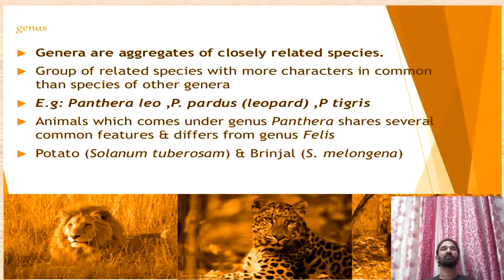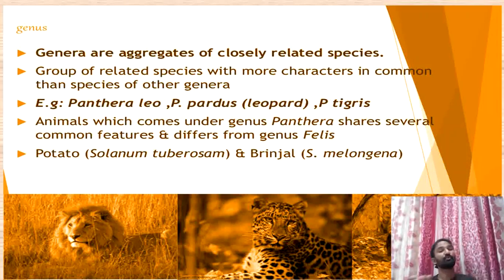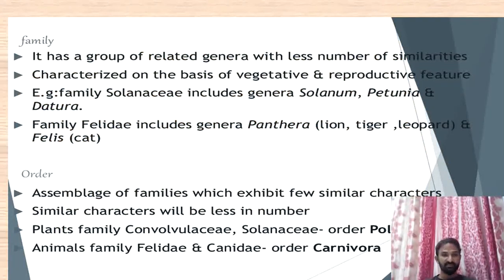Coming to genus — genera aggregate closely related species. A group of related species with more characters in common than the species of other genera. Panthera leo, Panthera pardus (leopard), and Panthera tigris come under the genus Panthera and share several common features different from the genus Felis. Similarly in plants, Solanum tuberosum (potato) and Solanum melanzana (brinjal) belong to the solanum genus, which consists of different characters compared to other genera of the same family.